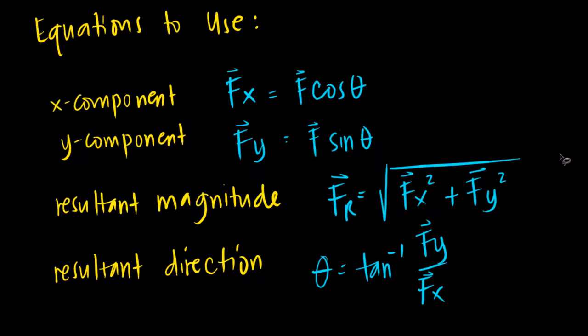For your resultant magnitude, that's the square root of Fx squared plus Fy squared. And as you can see, it looks like it was taken out of your Pythagorean theorem. And finally, the resultant direction is arctan Fy over Fx.